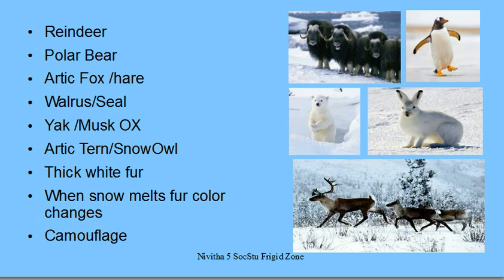Most of these animals have thick fur, and most of it is white. Some have black or brown fur — reindeer has different colors. Thick white fur is mostly found, and when snow melts, the fur color changes to brown. During the cold winter, the animals are in thick white color, camouflaging. This is what we call camouflage — C-A-M-O-U-F-L-A-G-E — changing color to suit the environment.